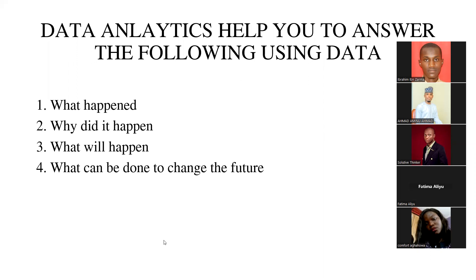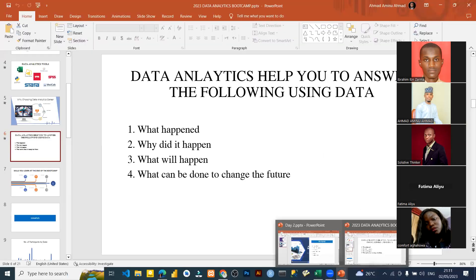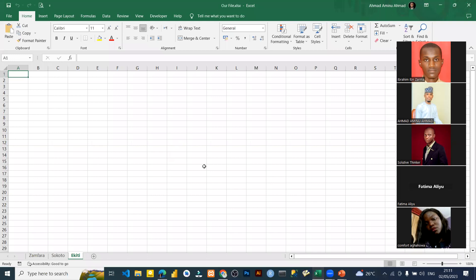After that recap, we discussed Excel — rows, columns, the sheet and workbook, and how to save an Excel file. That is what we covered yesterday. For today's class, we are going to discuss cell and cell designation, so I'm going to open Excel since what we're discussing has to do with Excel itself.